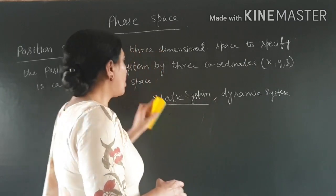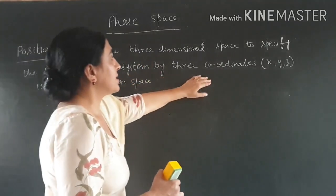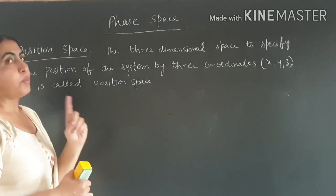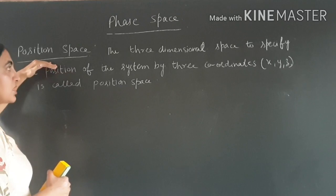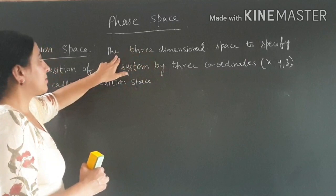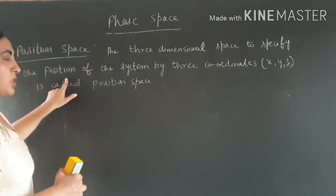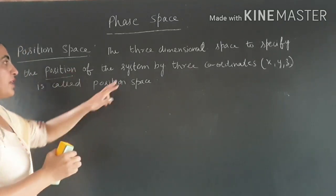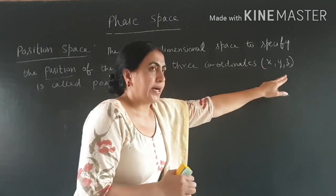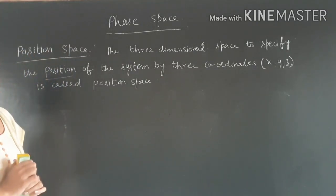For a dynamic system we want to know about both position and momentum. If we want to represent a particle having three coordinates X, Y, Z in a space, then that space is called the position space. Position space is the three-dimensional space used to specify the position of the system by three coordinates X, Y, Z.